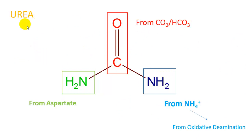The urea cycle is split between two compartments in the cell: the mitochondrial matrix, where the first two reactions occur, and the cytoplasm, where the remainder of the cycle is completed.